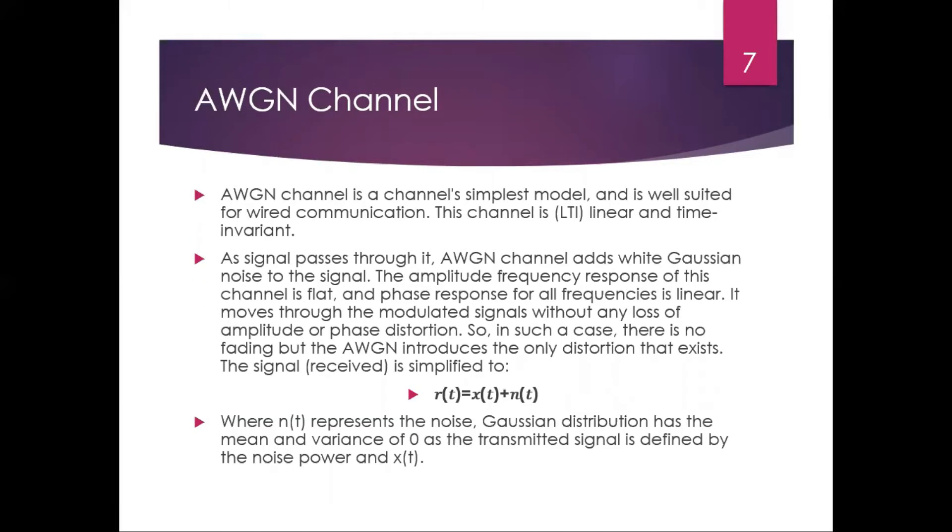What is AWGN channel? Basically additive white Gaussian noise is a basic noise model used in information theory to mimic the effect of many random processes that occur in nature. The modifiers denote specific characteristics and additive because it is added to any noise that might be intrinsic to the information system.